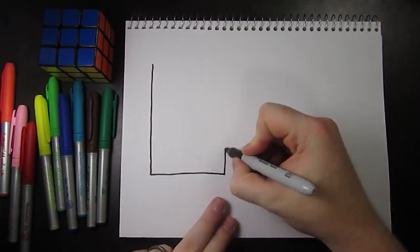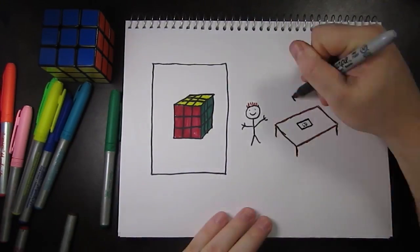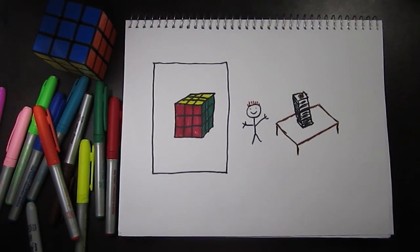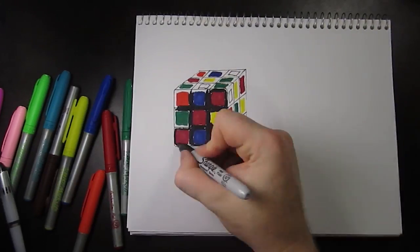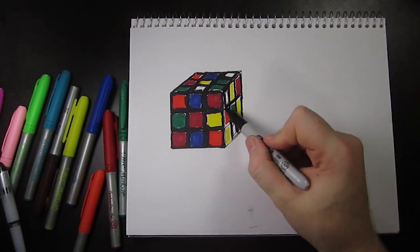Last time we used a sheet of paper to represent a Rubik's Cube. This time we'll go smaller. A standard Rubik's Cube is 57mm on each side.